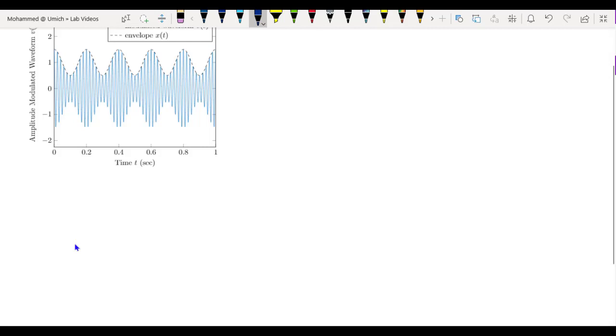Alright, so what is amplitude modulation? If x(t) is a continuous time signal, then the signal v(t) defined by v(t) equals x(t) cosine omega_c t is called an amplitude modulated carrier.